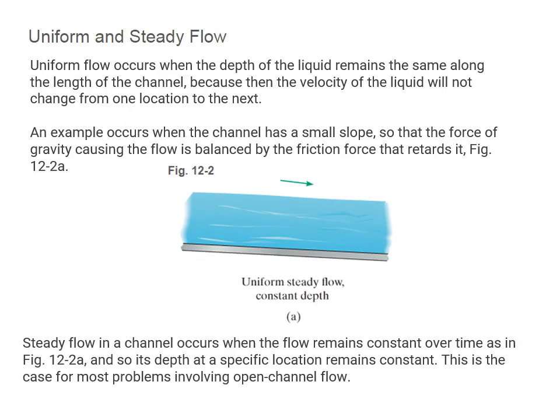First we will look at uniform and steady flow. Uniform flow occurs when the depth of the fluid remains the same along the length of the channel, because then the velocity of the liquid does not change from one location to another. This often occurs when the channel has a small slope such that the force of gravity causing the flow is balanced by the force of friction that retards it. Steady flow occurs when the flow remains constant over time, so its depth at a specific location remains constant. This is the case for most problems involving open channel flow.